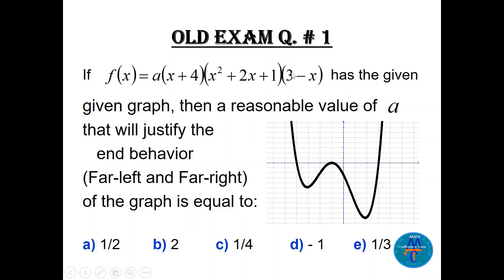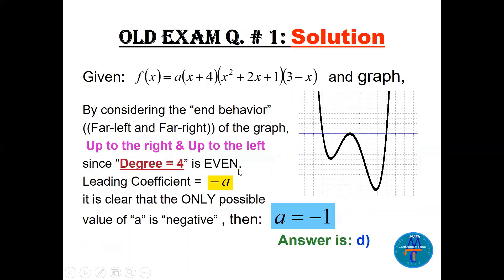The degree is 4, which confirms the up-right, up-left end behavior. We have a minus here, with coefficient plus 1 here and plus 1 here, so there is minus a in the leading coefficient. What is a reasonable value for a?